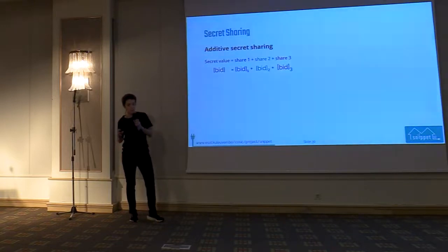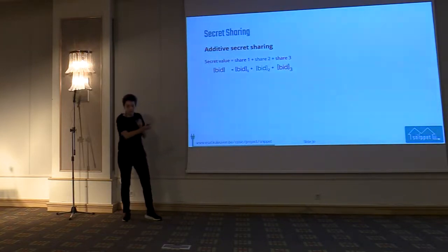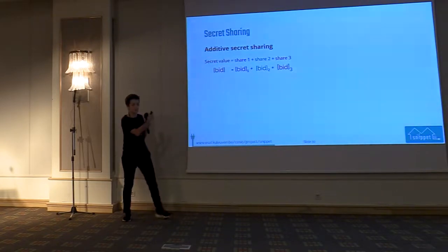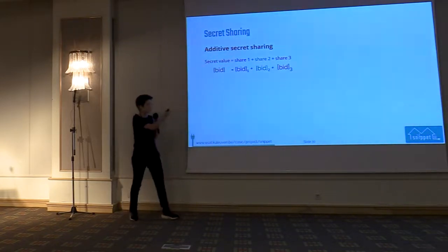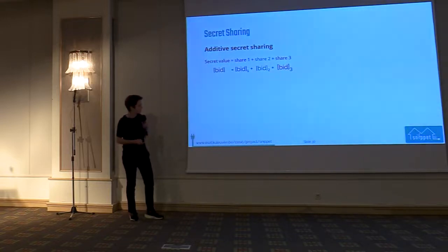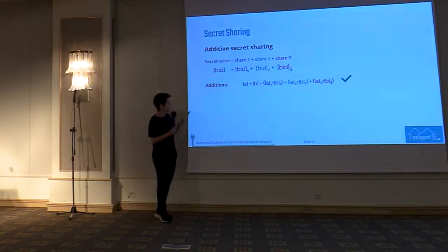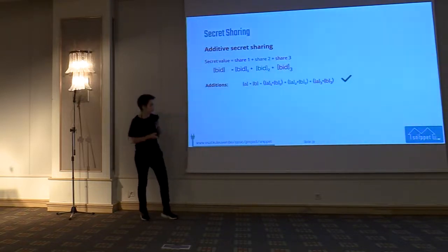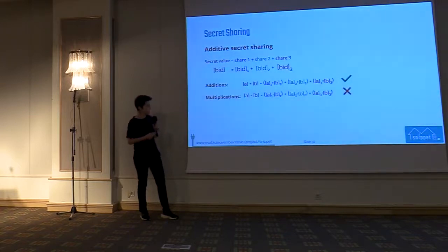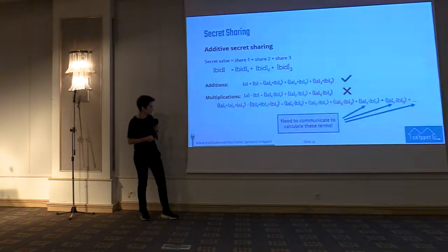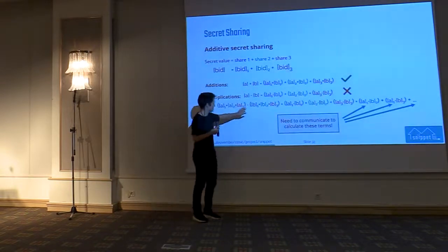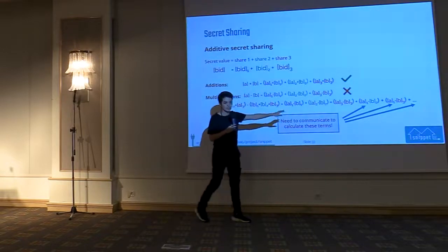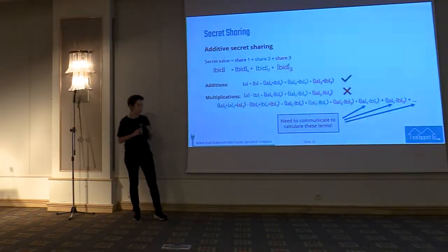I will give some information about how to do calculations with multi-party computation. There are different ways to secret share private values, but the easiest to understand is additive secret sharing, where the sum of all three secret shares is exactly the secret value. To do additions between two secret values A and B, it is enough for each computational party to locally add their shares of both secrets — this is very easy. But for multiplications, this doesn't work, because when you expand the multiplication there are terms that depend on shares from different parties, so multiplication requires communication between parties.